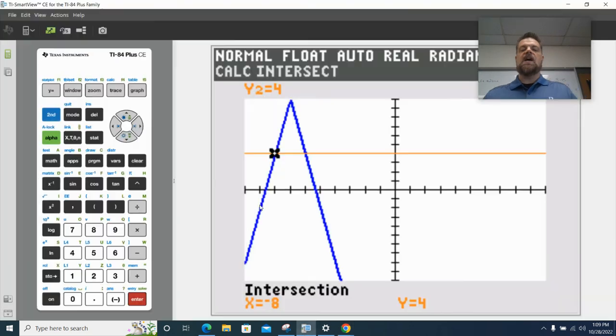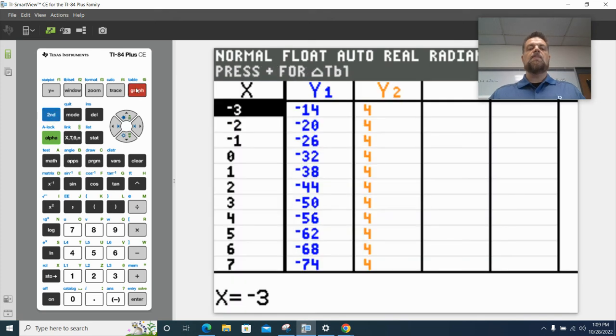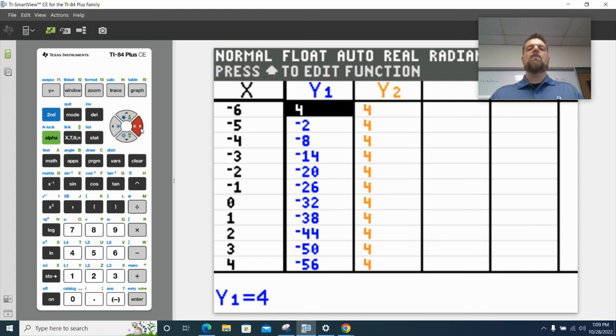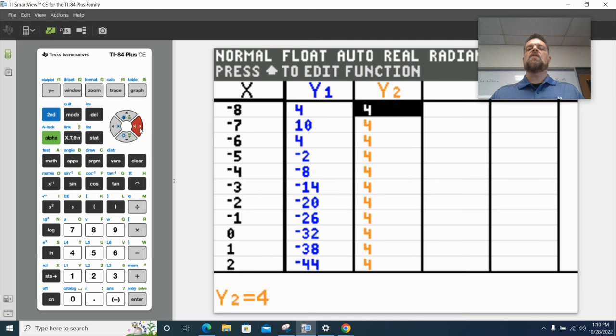Now one last thing I want to show you guys, you could do this the same way in the table of values. So if I go table, right? What did I say it was? Negative six and negative. So look here when X equals negative six, Y one equals four, Y two equals four. And if I go up two more spaces, when X equals negative eight, Y one equals four, Y two equals four.